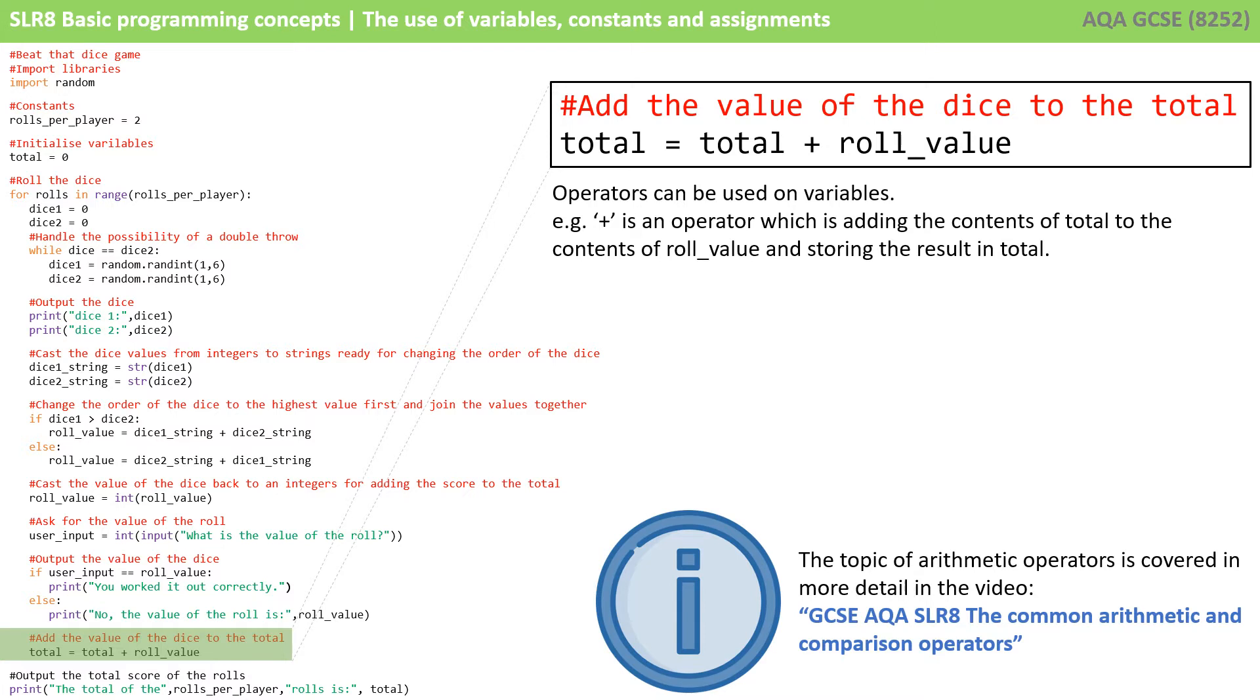So here we see an example of an operator, total equals total plus role value. And operators can be used on variables and constants. So with this plus symbol, we are adding the contents of total to the contents of role value. And then the result of that calculation is being stored back over the original contents of total. Now the topic of arithmetic operators is covered in more detail in a later video. So we won't look at other examples now.